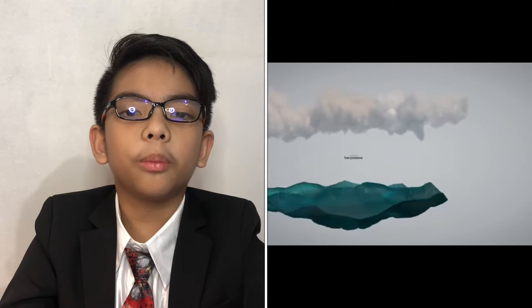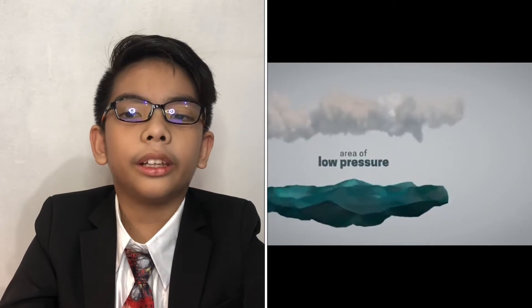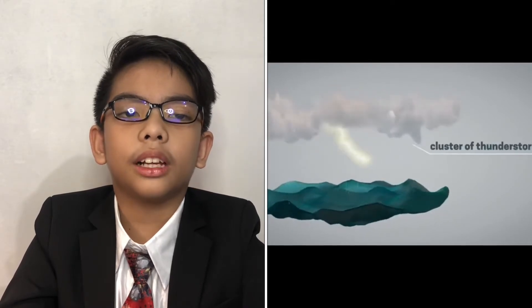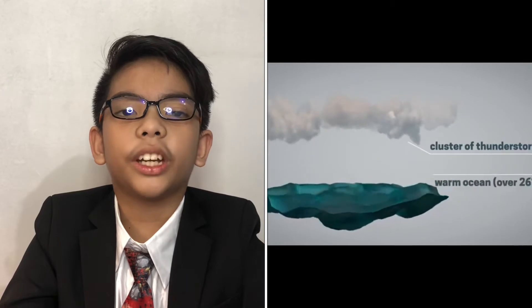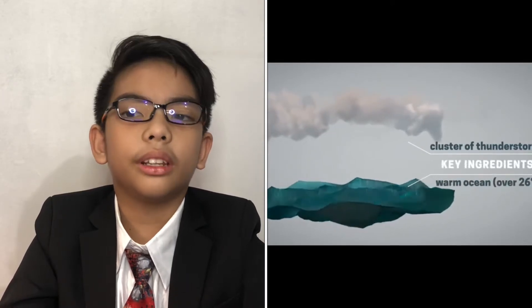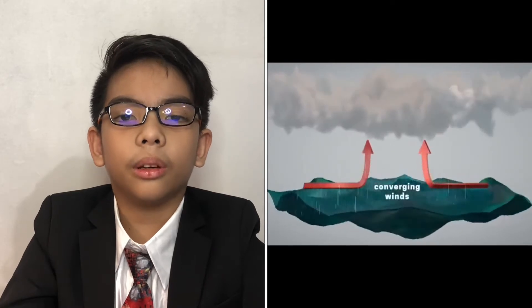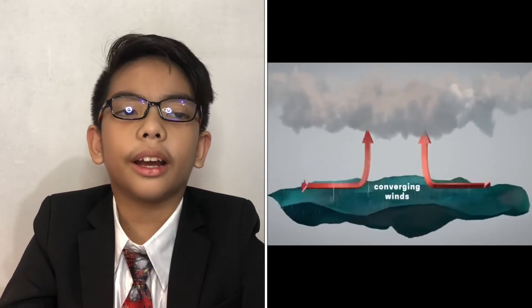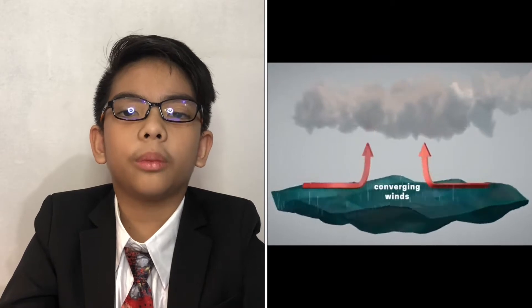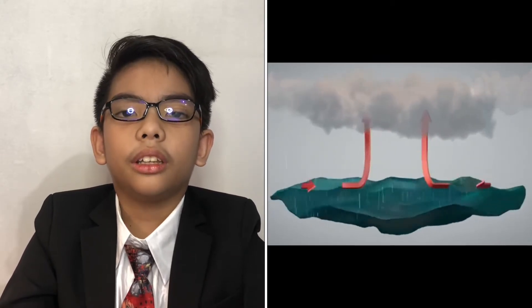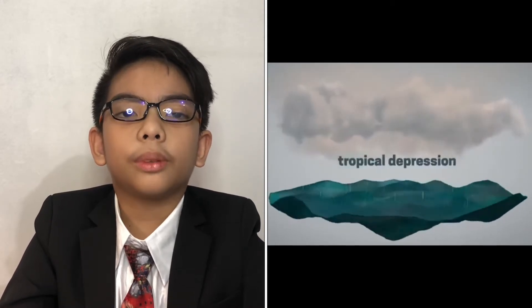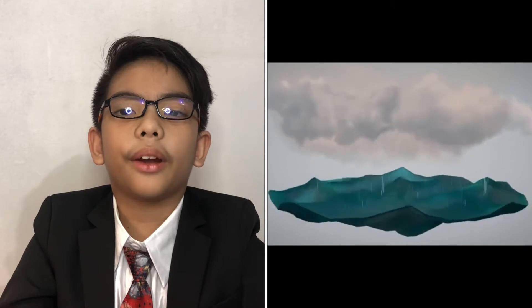When combined with warm ocean waters, typically over 26 degrees Celsius, they join as two of the key ingredients in transforming ordinary clouds into deadly typhoons. Converging winds and the movement of warm, moist air from the ocean upwards can also contribute to the circulation of typhoons. With an organized circulation, the low pressure area becomes a tropical depression. As the tropical depression drifts, it may encounter areas of the ocean where it is exceptionally warm.